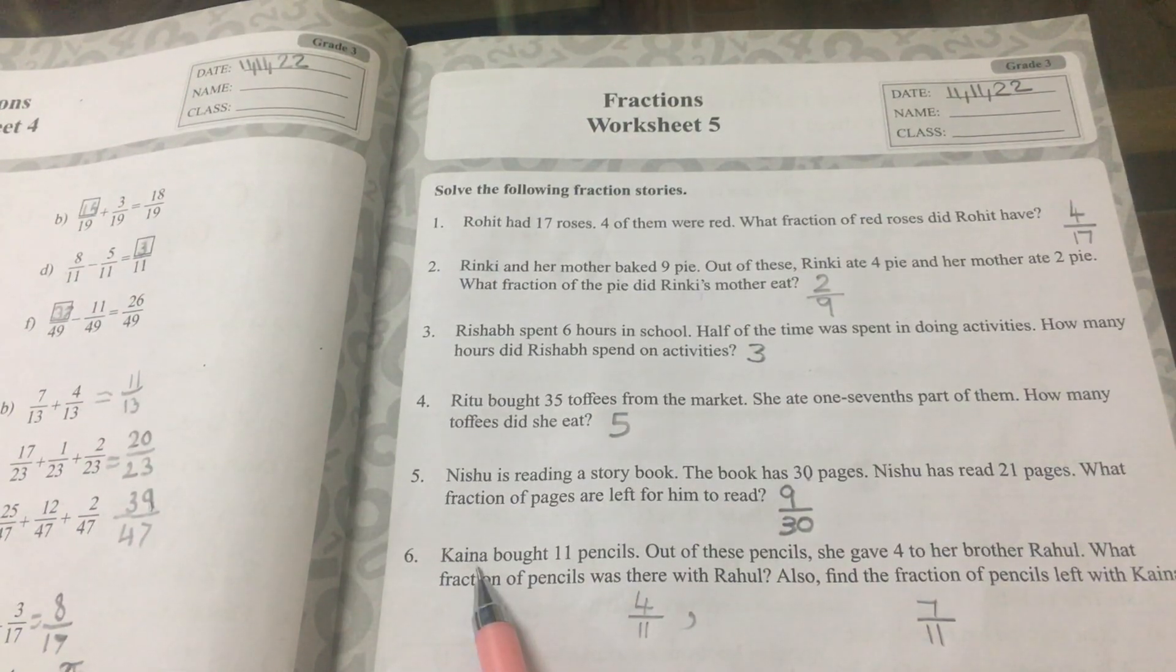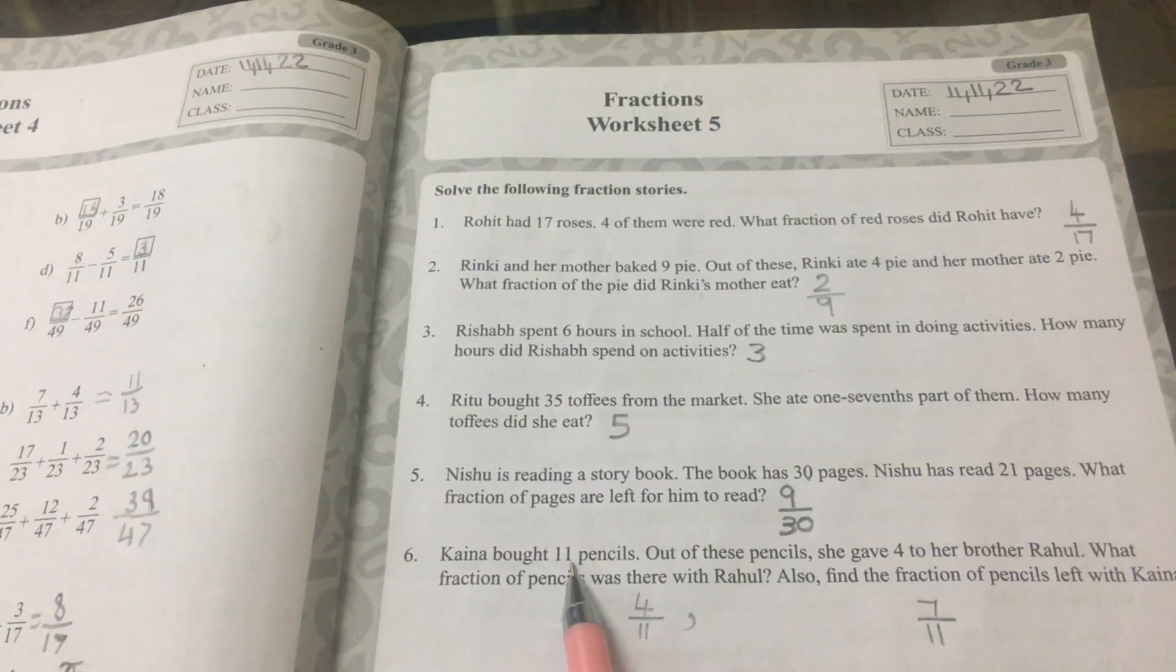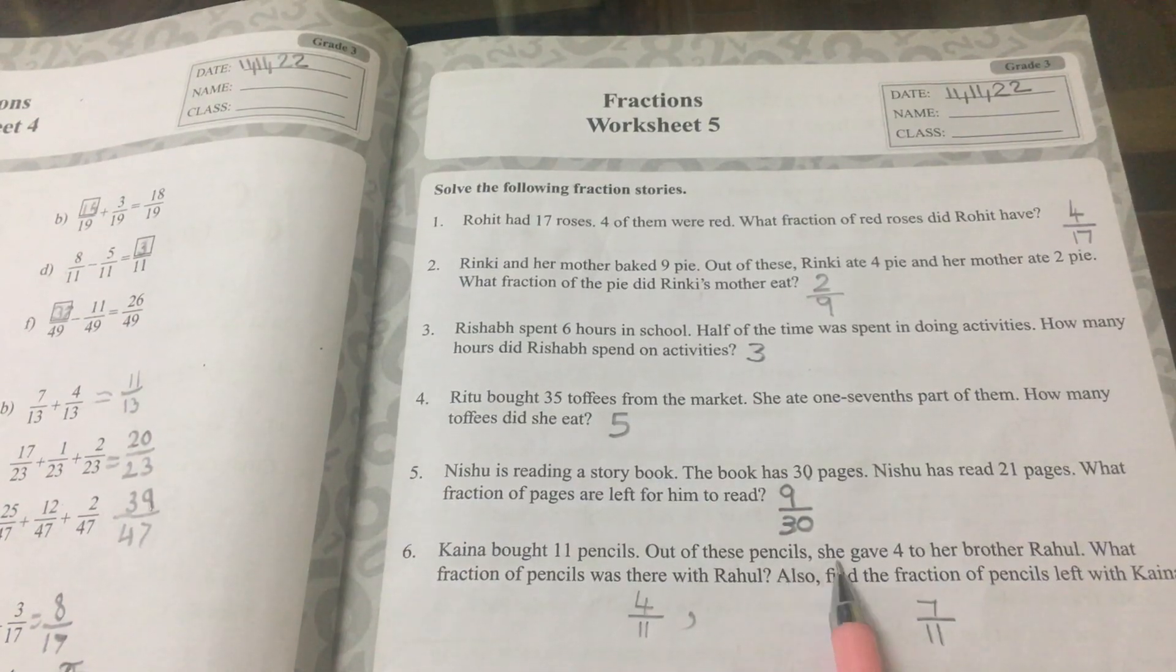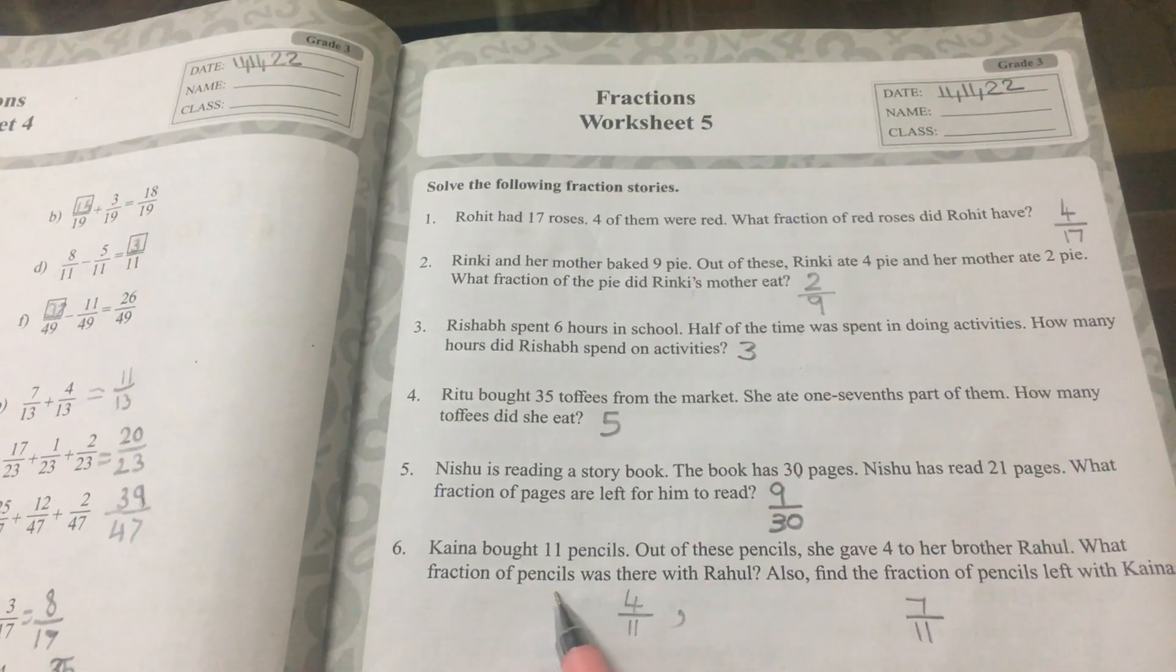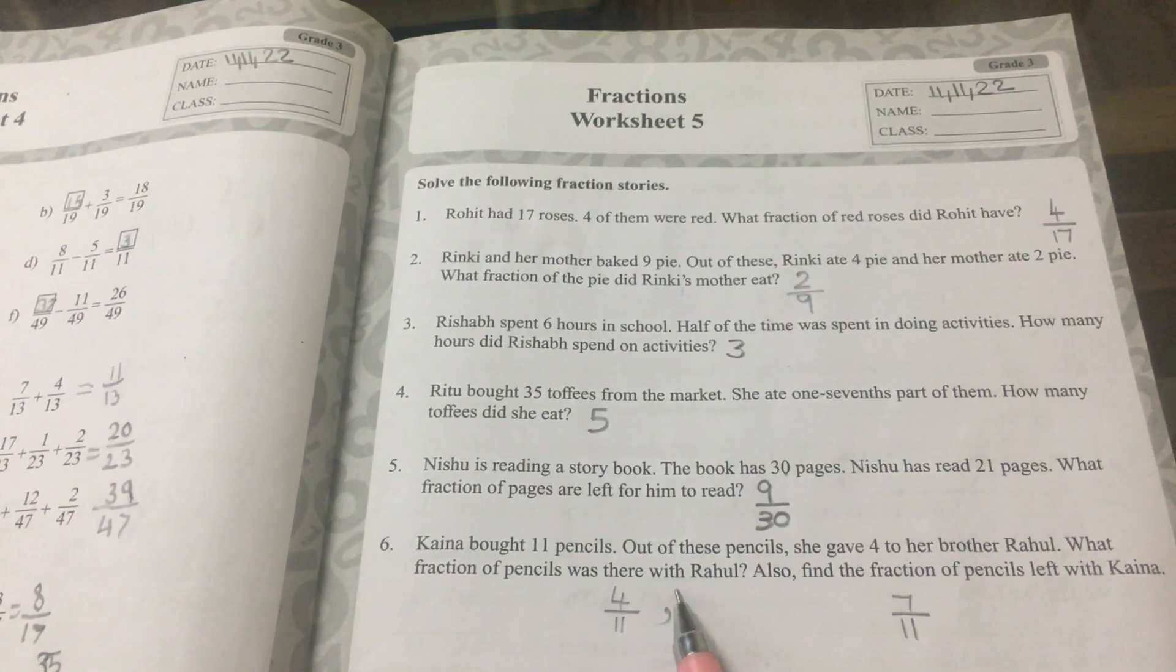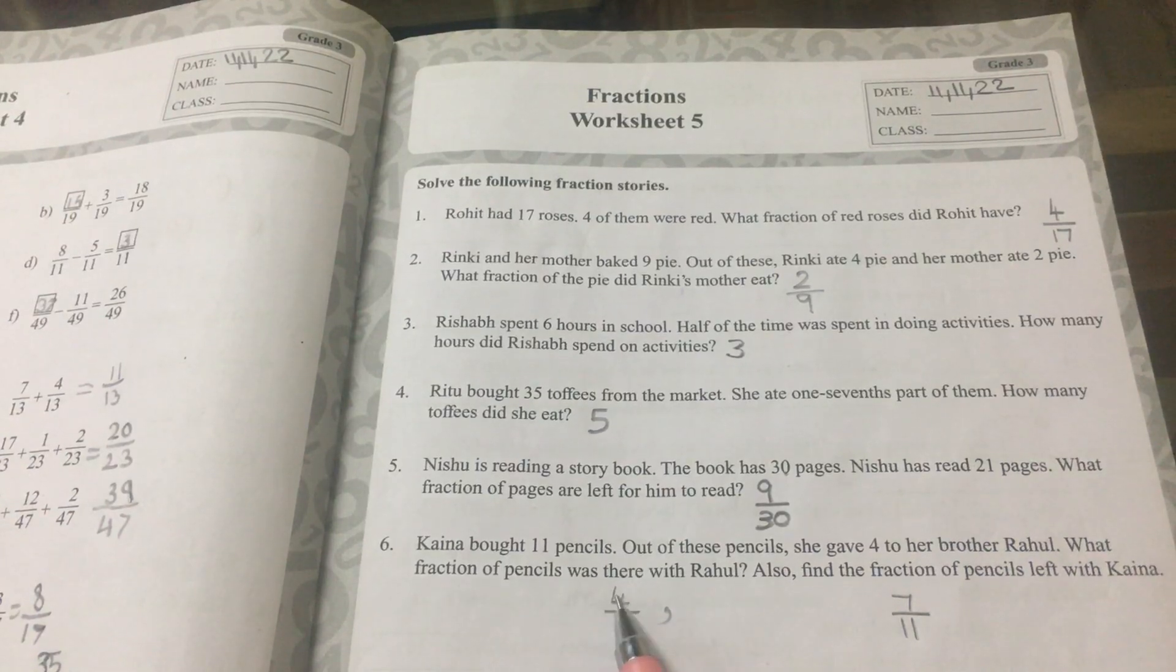Number 6. Kaina got 11 pencils. Out of these pencils, she gave 4 to her brother Rahul. What fraction of pencils was there with Rahul? The answer is 4 elevenths.